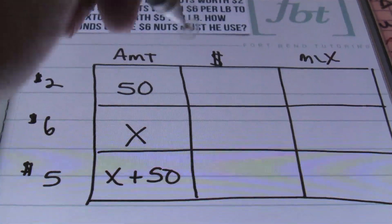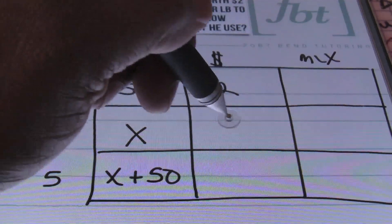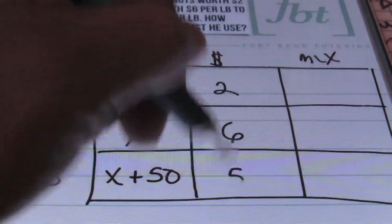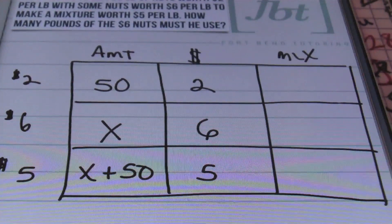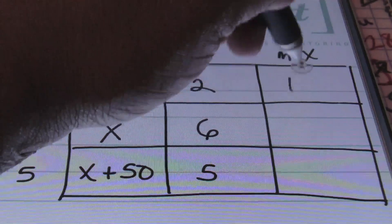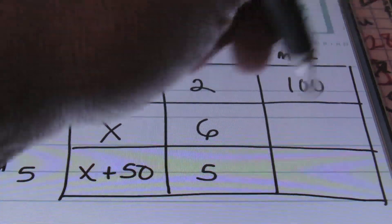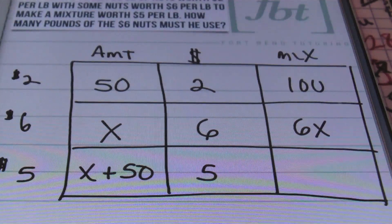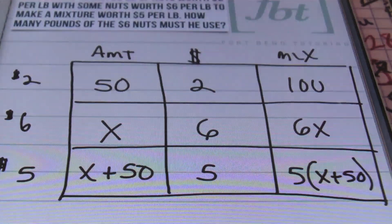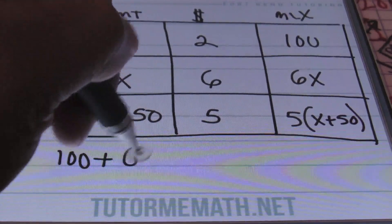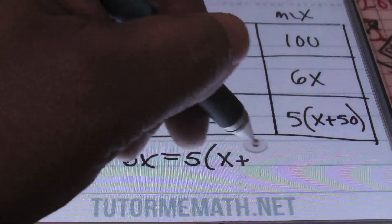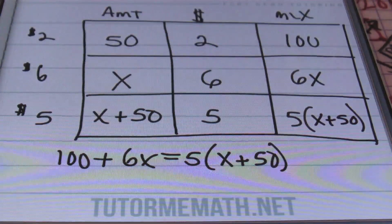Plugging in our prices: $2 for the first row, $6 for the second, and $5 for the final mixture. Multiplying first column times second column for the third column: 50 times 2 is 100; X times 6 is 6X; and (X plus 50) times 5 is written as 5 times (X plus 50). Remember it's the last column that defines the equation. So I write: 100 plus 6X equals 5 times (X plus 50). This is the equation we'll use to solve problem 2.